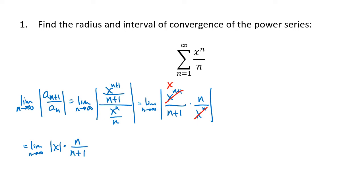The x and n are independent here. X is the value that we're plugging into this function — we're thinking of this as an f(x). But n is the index of the series; it starts at 1, goes to 2, goes to 3, and so on. So we can basically ignore the x and just focus on what happens as n goes to infinity. We've seen these kinds of limits a lot in our study of sequences and series, and this fraction goes to 1, so this limit is going to be the absolute value of x.